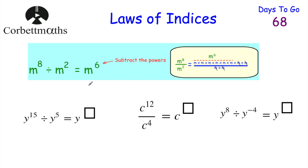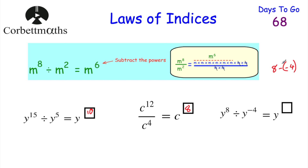Here are three questions to try — press pause now. First: Y to the power of 15 divided by Y to the power of 5. We subtract the powers: 15 take away 5 is 10, giving Y to the power of 10. Next: C to the power of 12 over C to the power of 4 — this means C to the power of 12 divided by C to the power of 4. Subtracting: 12 take away 4 is 8, giving C to the power of 8. Finally: Y to the power of 8 divided by Y to the power of negative 4. We do 8 subtract negative 4, and subtracting a negative is the same as adding: 8 plus 4 is 12, giving Y to the power of 12. If you got Y to the power of 10, C to the power of 8, and Y to the power of 12 — well done.